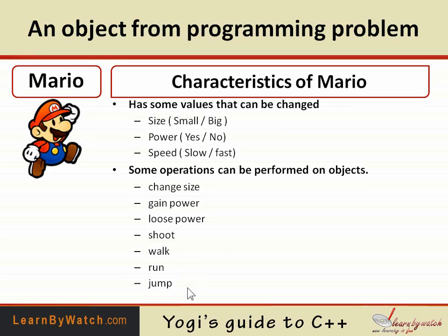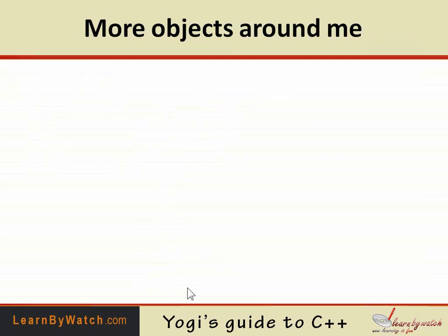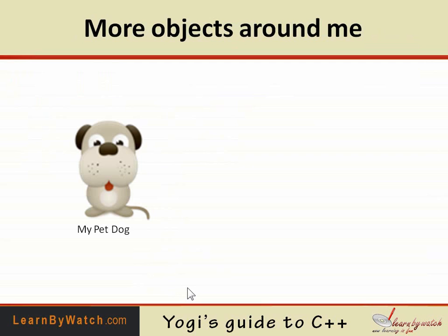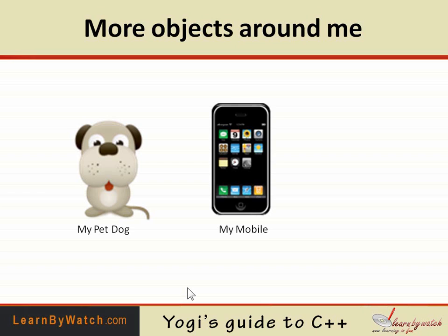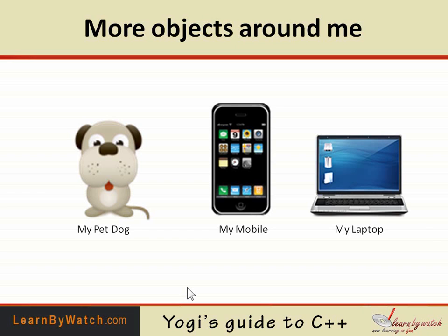Let's look at some more examples of objects around me. My pet dog is an object. My mobile that I purchased last year is an object. My laptop, which I am using to record this video, is also an object. So until now I have talked a lot about objects — I gave you the definition and showed you some examples.